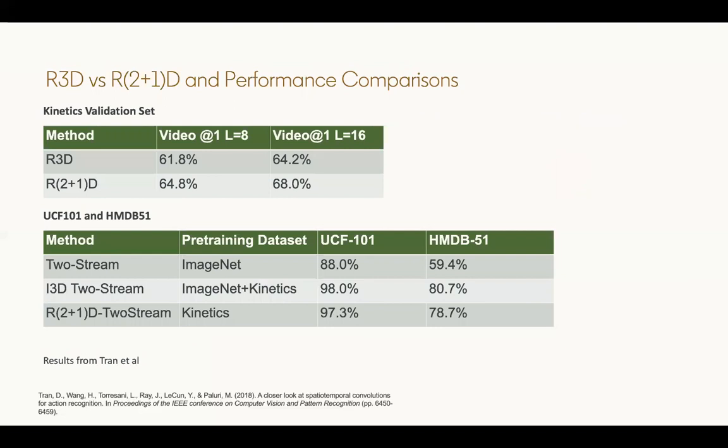In terms of results on the kinetics dataset, R2 plus 1D provides value over just R3D on the kinetics validation set. On UCF101 and HMDB51, we can see that the two-stream network with 3D convolutions using inflated 2D networks performs the best.